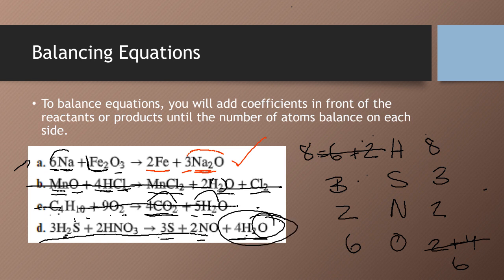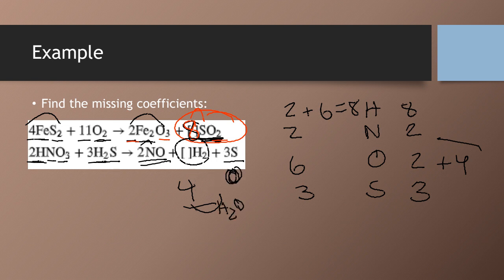Practice this some, and you'll get the hang of it. The idea is just to change the coefficients on each side. On the ones that are given in your lab assignments, it's going to require more than just one coefficient change. So you just have to keep up with the numbers as you're changing them.